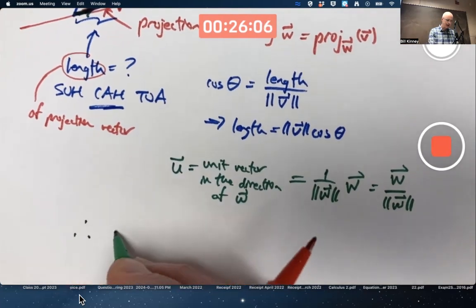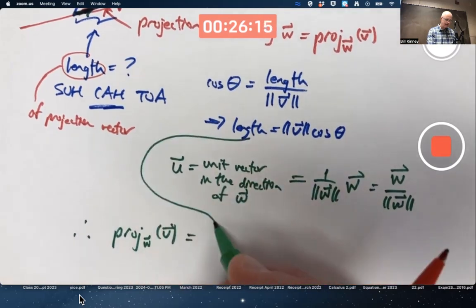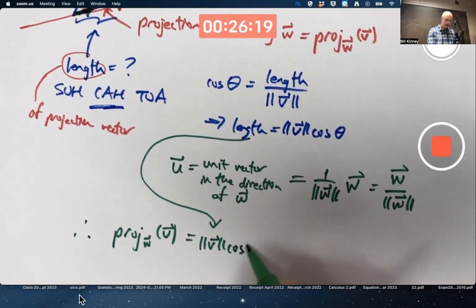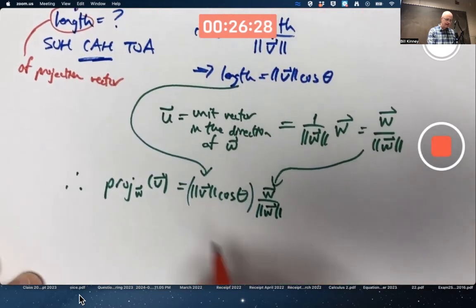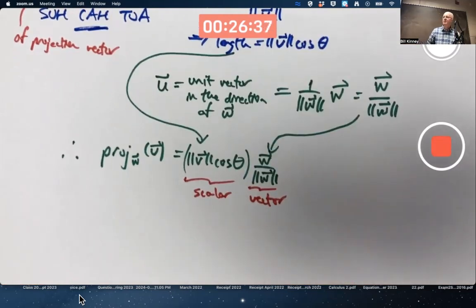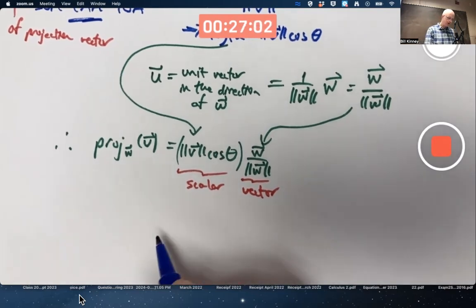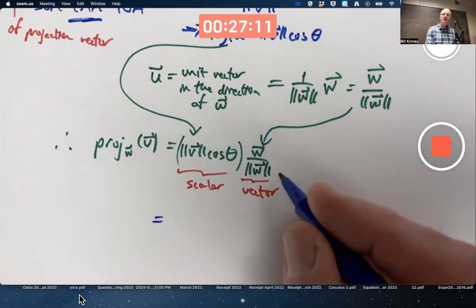Therefore, the projection vector of V along W should be this length times, that's scalar times, this unit vector. This is a scalar, a number, this is a vector. That is one formula for the projection vector. However, it's not a super useful formula because we'd have to figure out theta first if we're going to use it. We'd like to avoid figuring out theta to figure out this projection vector.